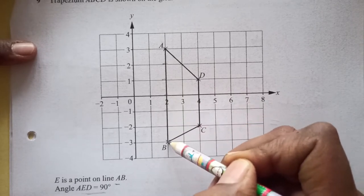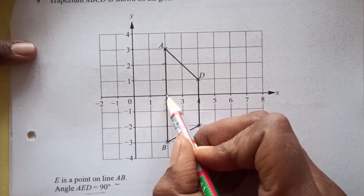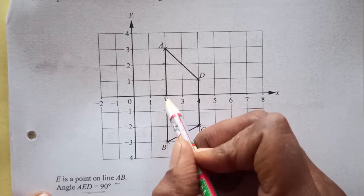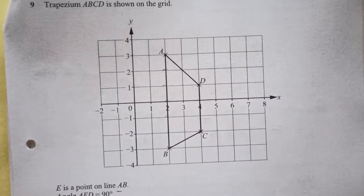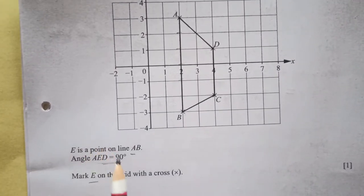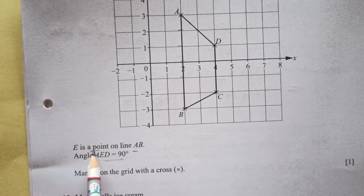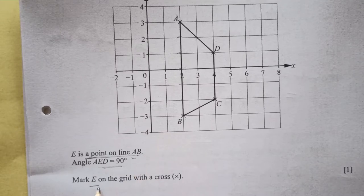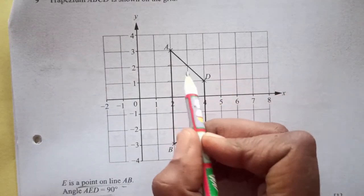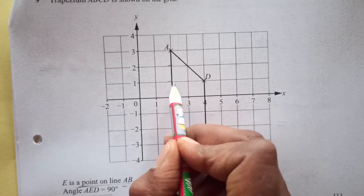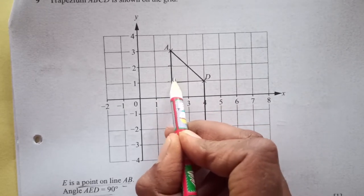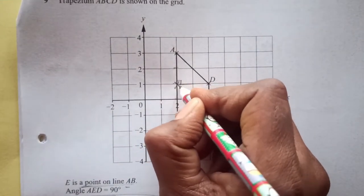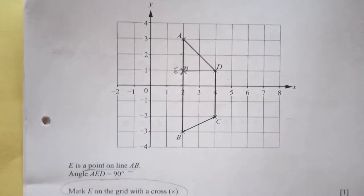Wait — E is a point on the line, not necessarily the midpoint. D is here, so for angle AED to be 90°, the line ED must be perpendicular to EA. Drawing the line from D to meet AB at a right angle gives us point E. This is our point E, one mark.